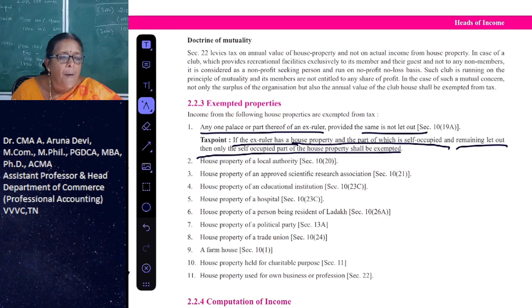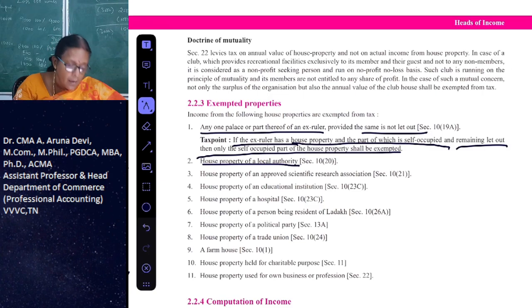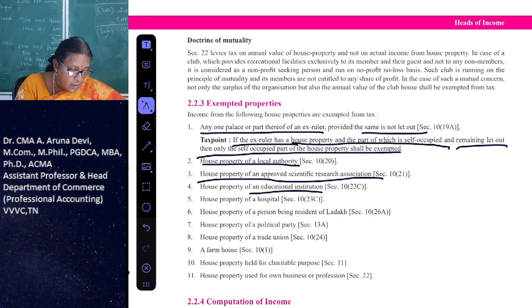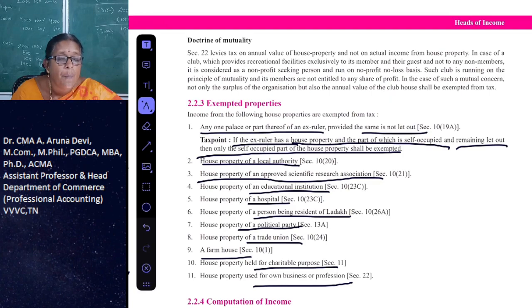Other exempted properties include: house property of a local authority, approved scientific research association, educational institution, hospital, persons being residents of Ladakh, political party, trade union, farm house used for charitable purposes, and property used for own business or profession.